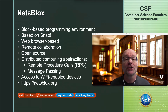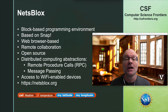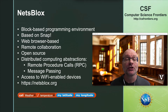The two abstractions that allow students to access the internet and create distributed programs are remote procedure calls and message passing. Remote procedure calls, or RPCs, let users make a call to a function that runs on the server. Related RPCs are grouped together into services. For example, the weather service has RPCs that return the current temperature, humidity, wind speed, and so on at the desired location specified as an input argument.